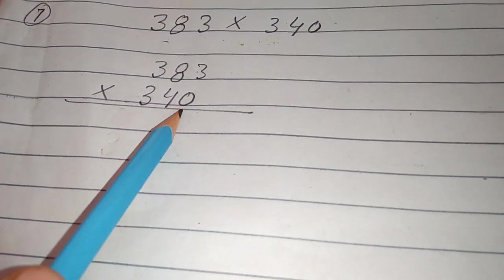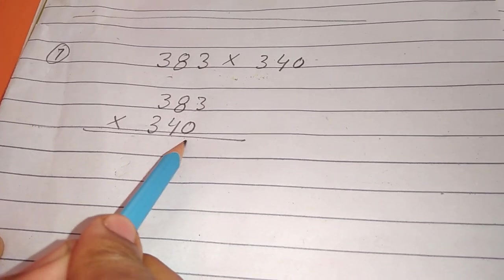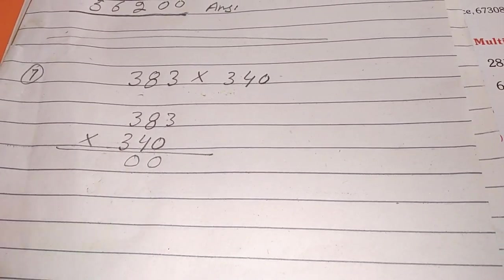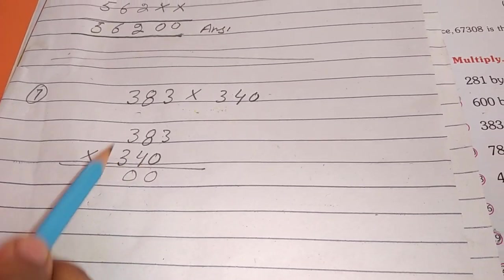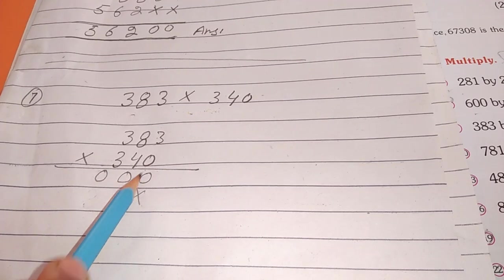First of all, we have to multiply 0 by 3, then it will be 0. 3 by 8, then it will be 0. You have to know that if you multiply 0 by any other thing, then it will be 0. Cross, because we have to fix this number.